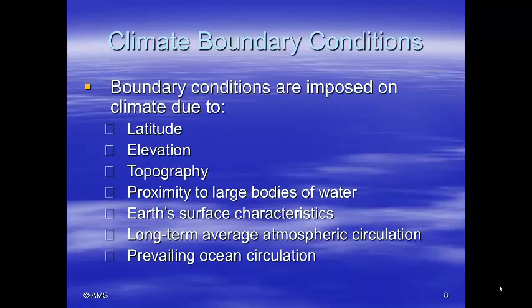Boundary conditions are imposed on the climate due to latitude, elevation, topography, proximity to large bodies of water, surface characteristics, the long-term average atmospheric circulation, and the prevailing ocean circulation. We'll discuss each one of these in detail.